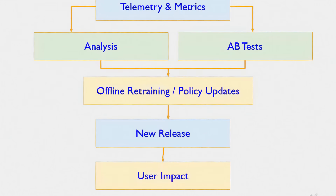How does it keep getting better? The answer is a continuous quality and feedback loop. The system gathers telemetry and metrics — not the content of your conversations, but performance signals like latency, reliability, and success rates — giving engineers a clear view of how the model behaves at scale. Teams run A/B tests, comparing different versions of the model or policies to see which produces clearer, safer, or faster responses. Offline, these insights feed into retraining the model or updating its safety rules. When improvements are ready, a new release is shipped. User impact is constantly monitored — it's not just about making the system smarter, but making sure the answers you get are genuinely more useful, safe, and efficient. Measure, experiment, retrain, release, and verify: a continuous cycle of improvement with users at the centre.